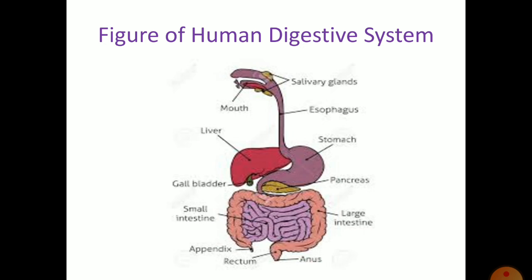The unused part, or the waste part of the food, goes from the small intestine to the large intestine. The large intestine forms the faeces, which are stored in the rectum and passed out of the body through the anus.